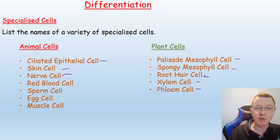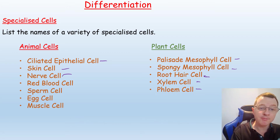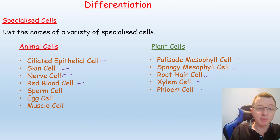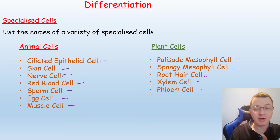Nerve cells transmit electrical nerve impulses from the central nervous system to the muscles, to help stimulate and control movement. Red blood cells carry oxygen around the body so it can be utilised in respiration by the body cells. Sperm cells and egg cells are utilised in reproduction, and muscle cells will contract and relax to control movement.